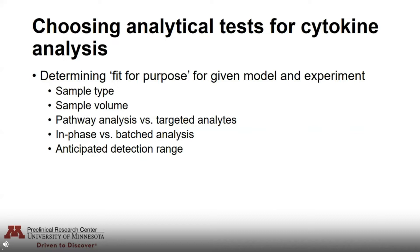You should also consider whether you'll be running in-phase or batch analysis. In-phase is where you run a small number of samples collected along with your study, versus batch analysis where you collect throughout the study and save samples to be run in a large batch at the end. You should also think about your anticipated detection range. While this can be difficult to predict, you should be able to anticipate whether you expect high levels of inflammation and therefore high circulating cytokines, or whether levels will be low and sensitivity will be very important.